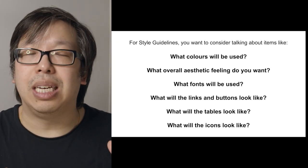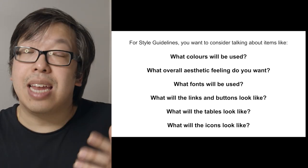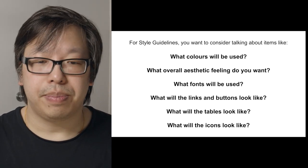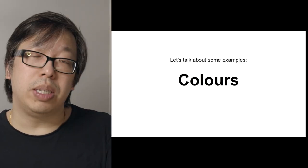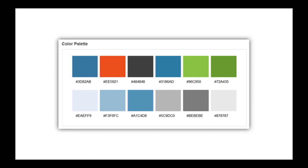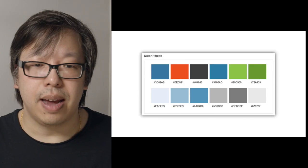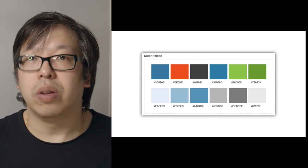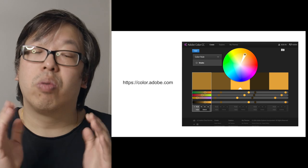These are the kinds of questions you want to ask among your team — what is it going to look like? You can draw inspiration from other websites. Let's take a look at a couple of examples. Colors is a big one — you and your team are going to decide what the color palette of your website is. Your color palette may look like a bunch of swatches: a couple blues, greens, grays, and occasionally a bright orange.